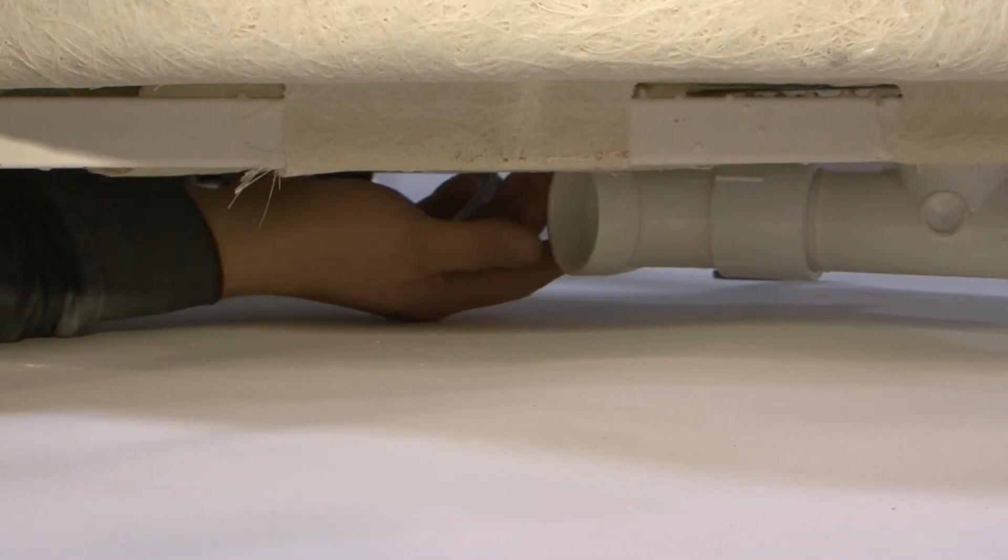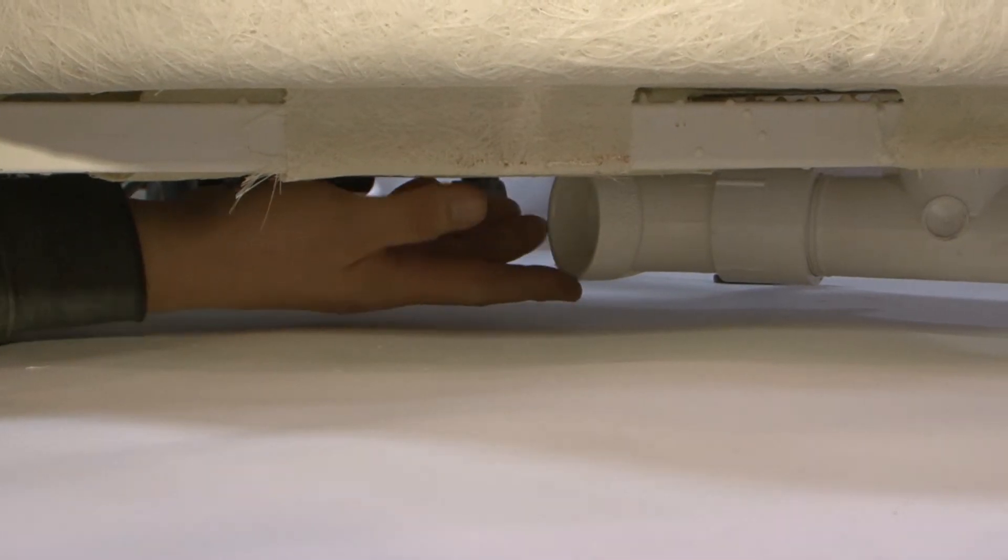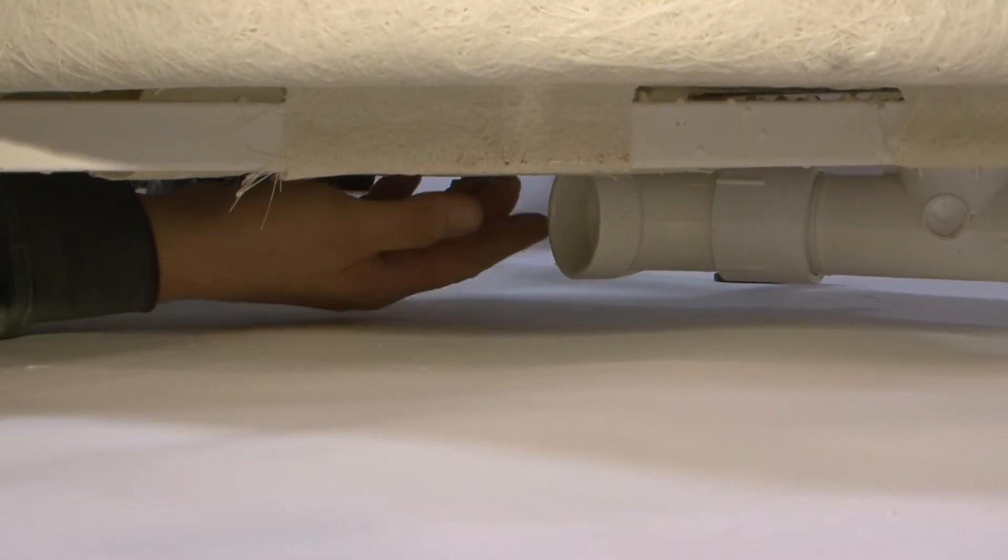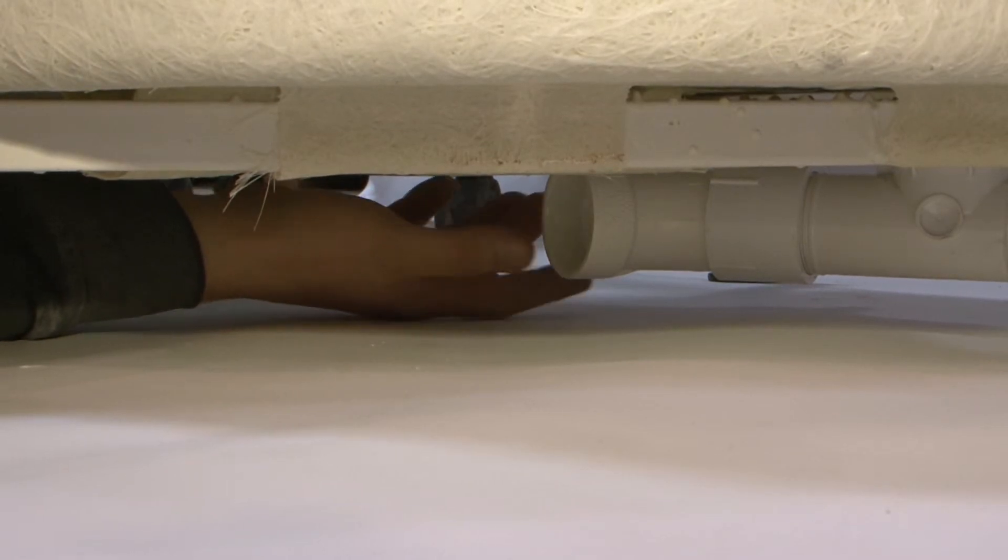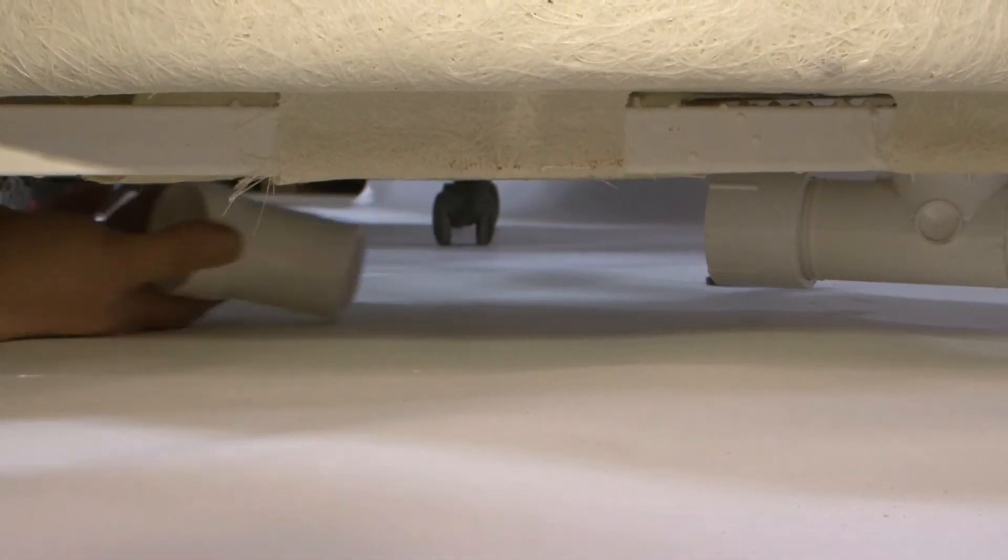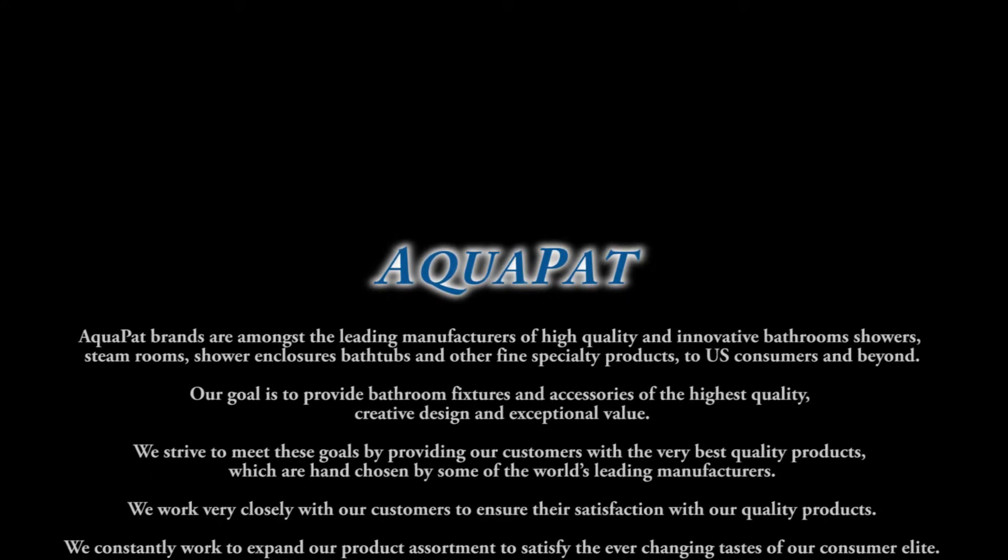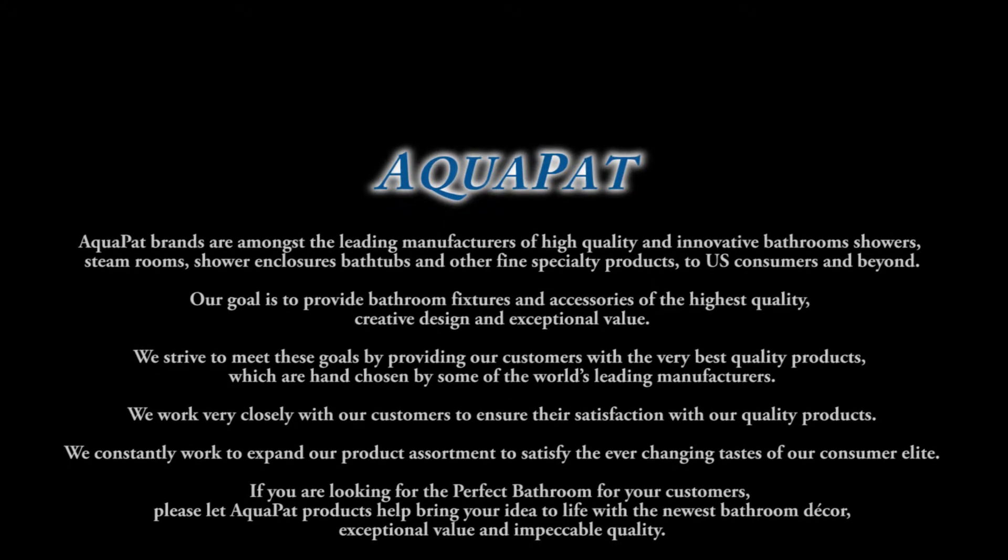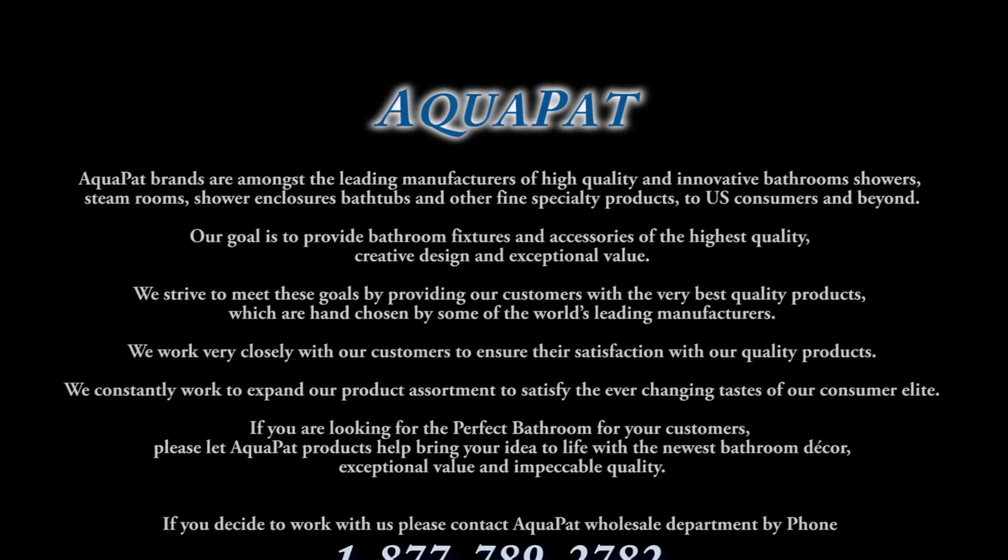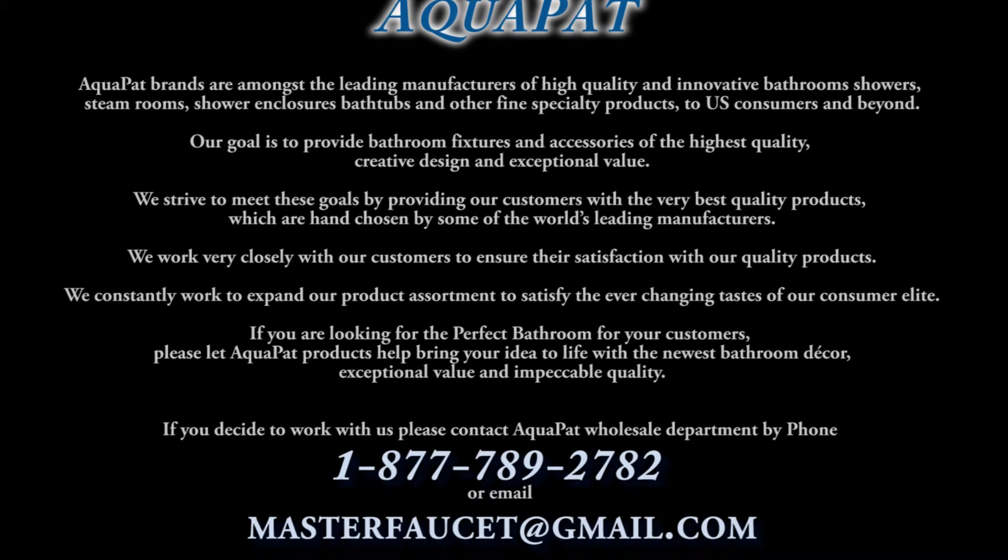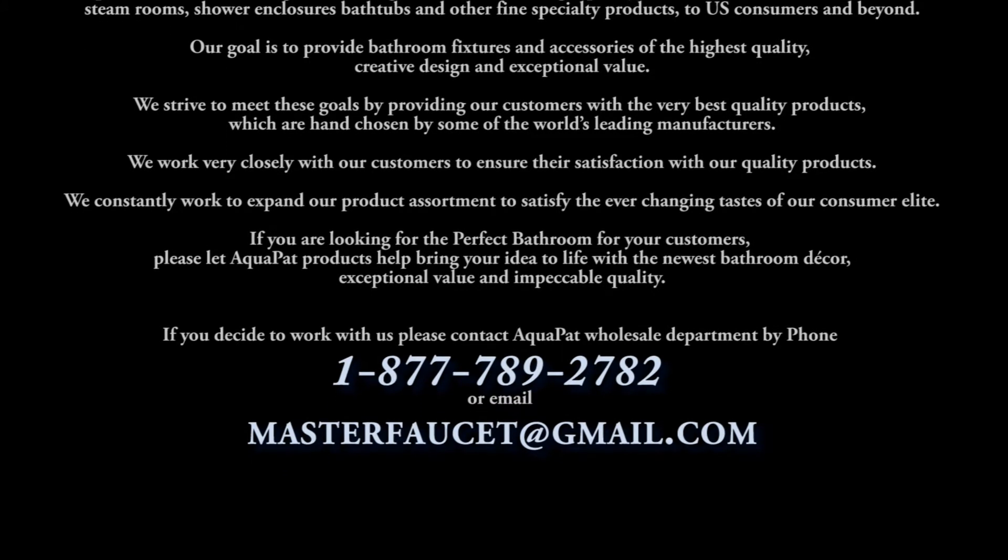if you have a P-trap on this side, we can use the 45 or elbow to turn our pipe, you know, wherever location we have a P-trap.